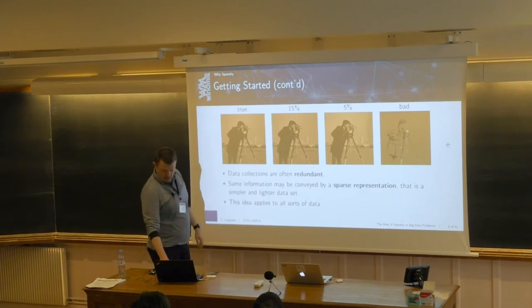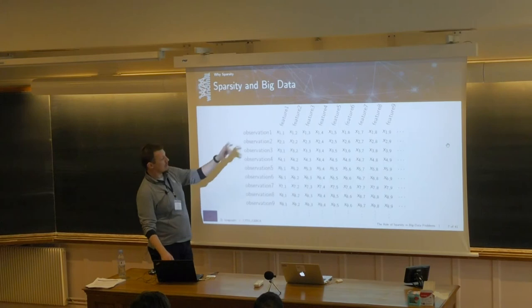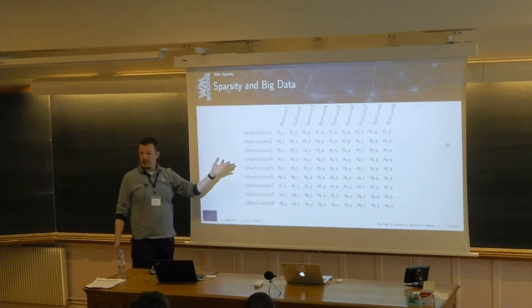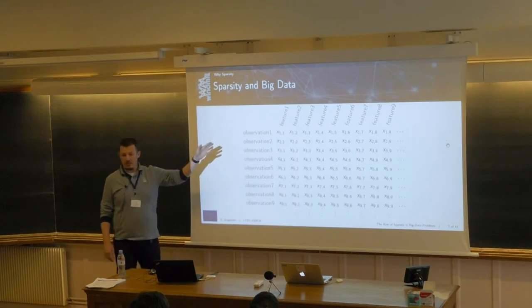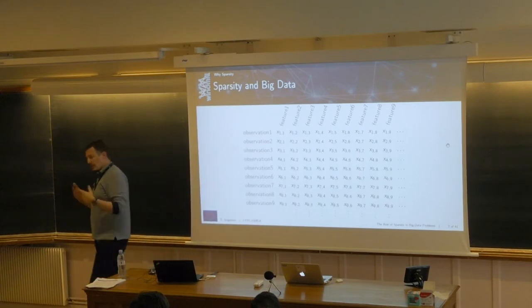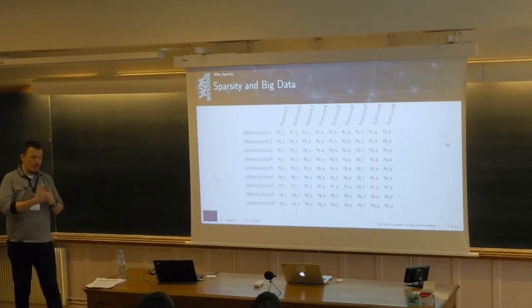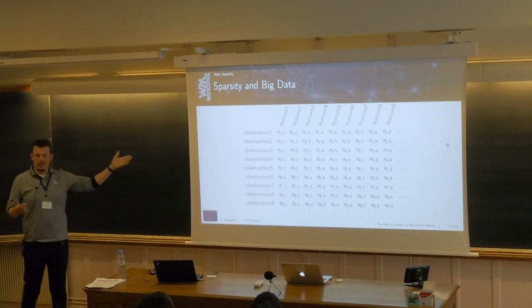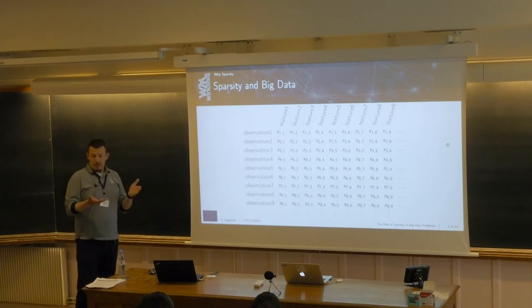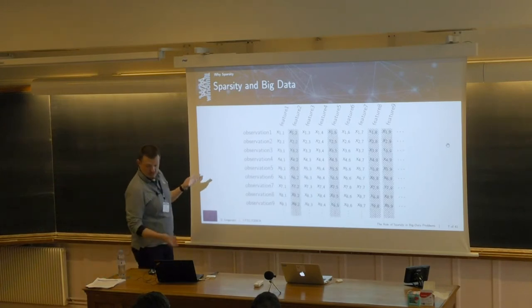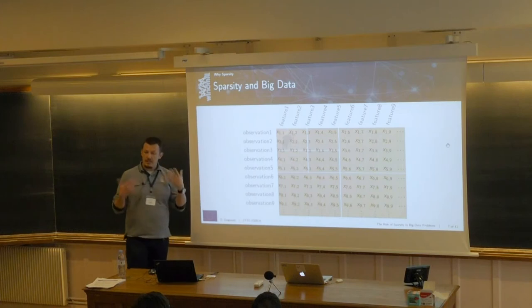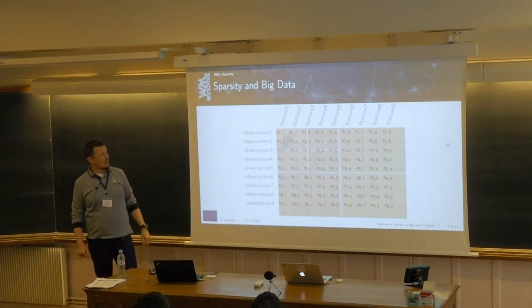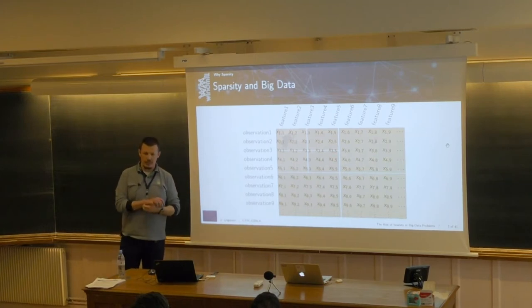Why would we want to find sparse representations? Our typical dataset has observations, each described by a long set of features. Since we often don't know what to measure, we measure everything and end up with big tables. Sometimes reducing complexity is as easy as removing unneeded features; other times it requires a transformation — as we did with the image — to find a sparse representation of the dataset.